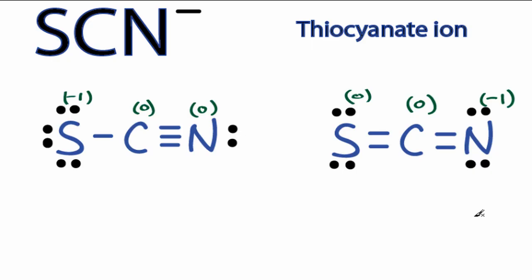Nitrogen makes more sense to have a negative 1 charge than sulfur because nitrogen is more electronegative. Because of that, this right here is going to be the more likely Lewis structure.